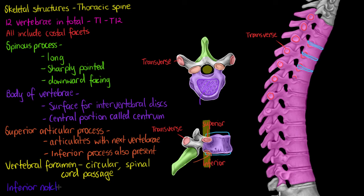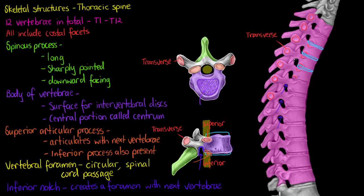There's no point having the spinal cord there unless we can get the messages to the rest of our body as well. The next feature is our inferior notch. Looking at the spine, the inferior notches on a few of our thoracic vertebrae are points that, when you take into consideration the vertebra above, a foramen — a hole — is created. That's a hole through which the nerves coming off our spinal cord are able to pass and go into the extremities of our body.